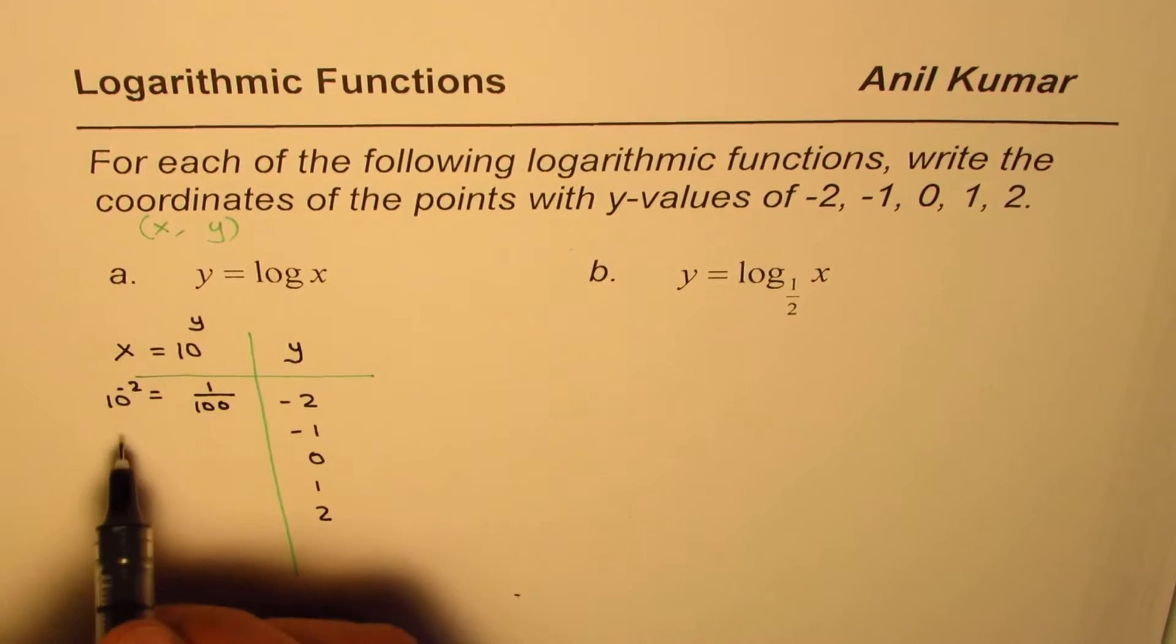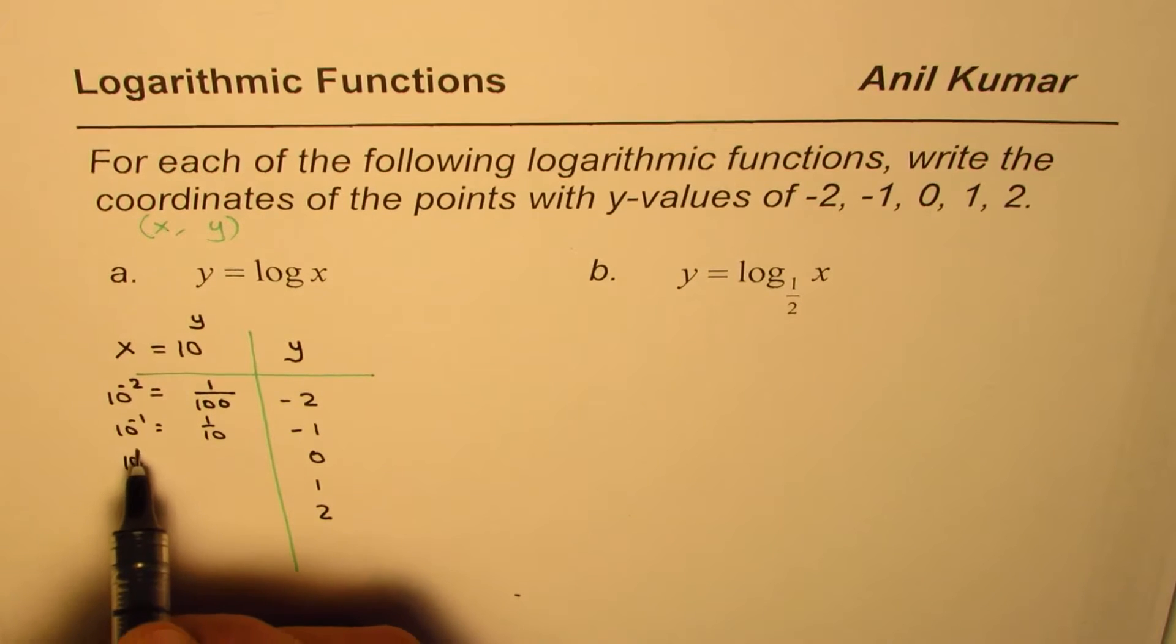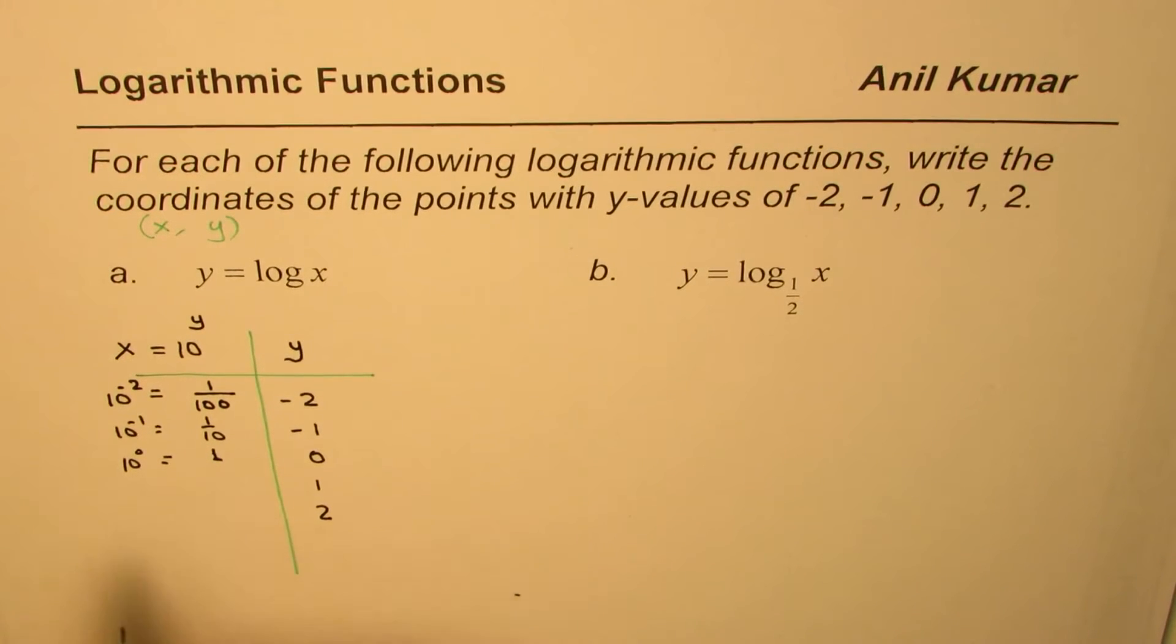The other one is 10 to the power of minus 1, which is 1 over 10. Then, 10 to the power of 0, which is 1. 10 to the power of 1, which is 10. And then, 10 to the power of 2 will give us 100.